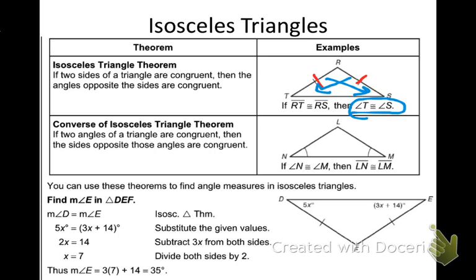The converse says the other way: if I know the angles are congruent, that means the sides are congruent. So the isosceles triangle theorem and its converse basically say the same thing both ways — sides congruent means angles congruent, angles congruent means sides congruent. Must know that.